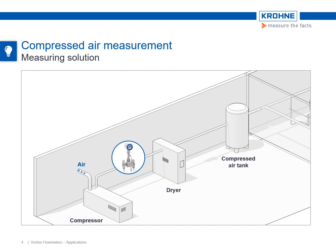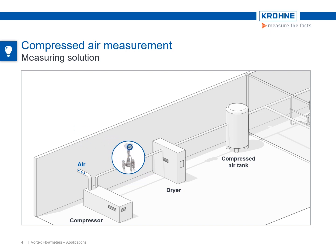To determine the FAD value, the flow rate, the operating temperature, and the operating pressure at the compressor outlet side are measured. In addition, the meter requires externally derived values for ambient temperature and pressure at the compressor suction side, the actual motor speed, and the relative humidity at the intake and outlet side. These values are programmed into the vortex flow meter.